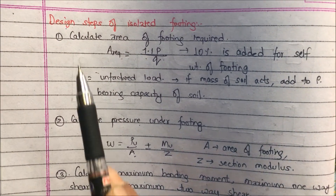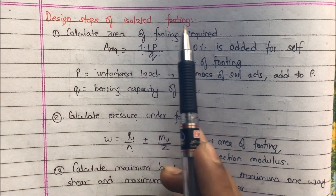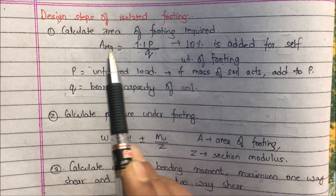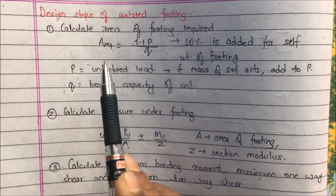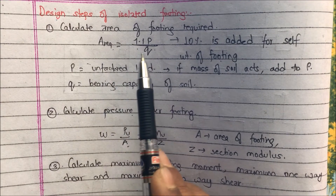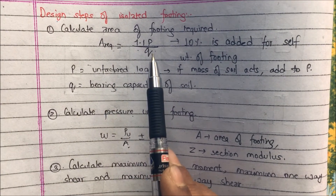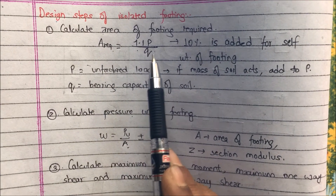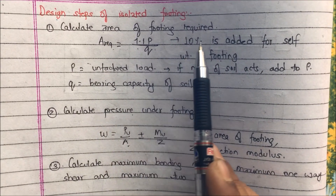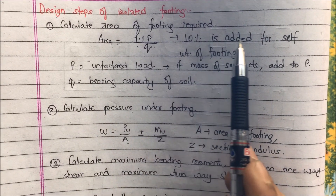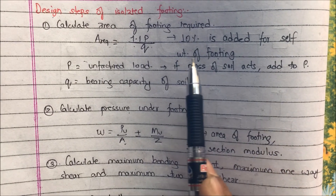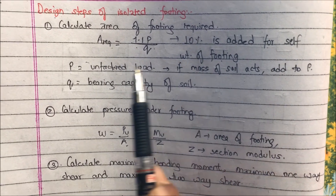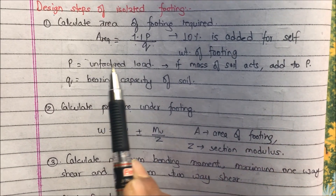Design steps of an isolated footing. The very first step is to calculate the area of footing required. Area required is equal to 1.1 times P divided by Q. Here 10% is added for the self weight of the footing, which is why it is multiplied by 1.1.